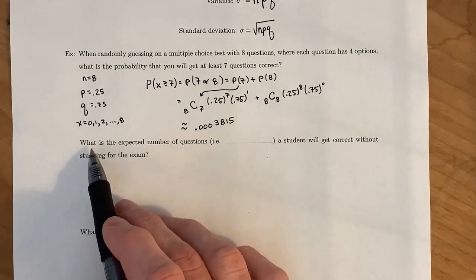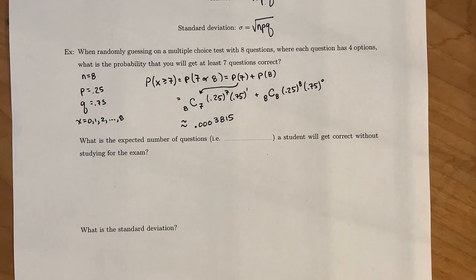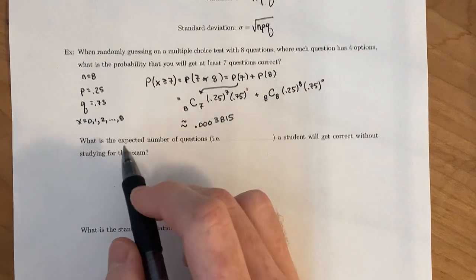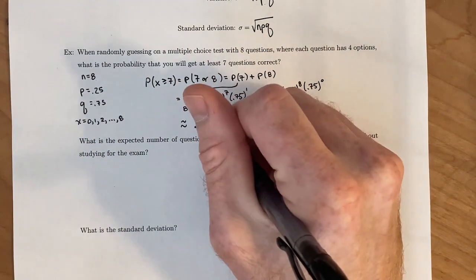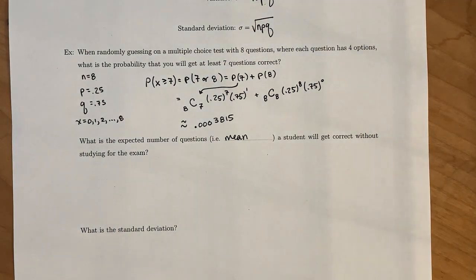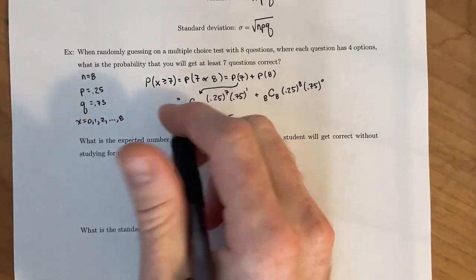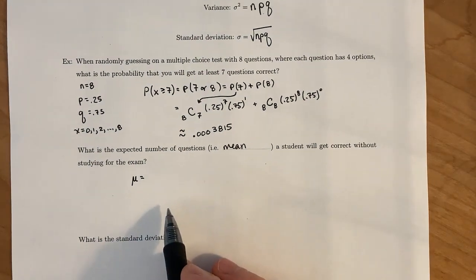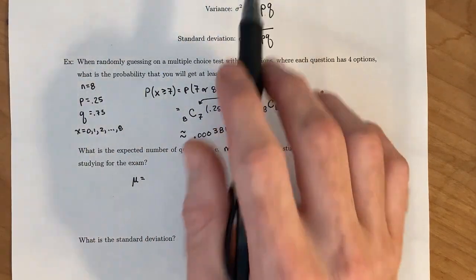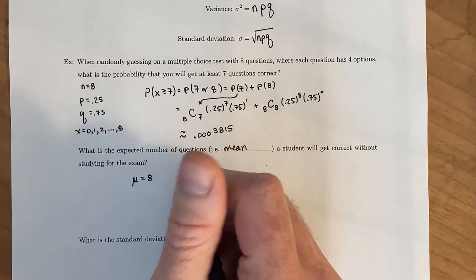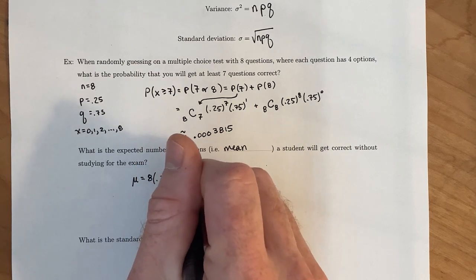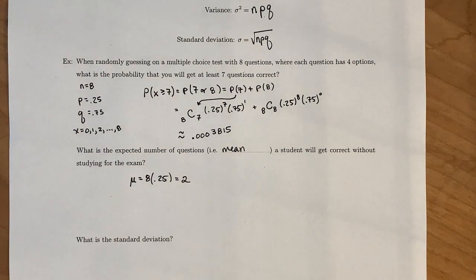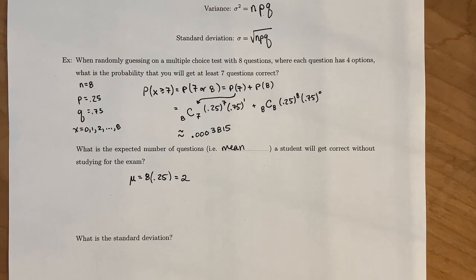And so, why don't we figure out what the expected value is? So, if you don't study at all, and you just come in and fill out A, B, C, D, or whatever, what would be the expected score you would get on that test? And so, the expected number of questions, which is your expected value, which is just another name for the mean of getting the number of questions correct without studying for the exam. Well, we calculate mu. And because we have ourselves a binomial distribution, we know that the mean is equal to N times P. And so, we have 8 as our N. Our P is 0.25. And so, you would be expected to get two questions correct if you just randomly started picking out answers out of those eight questions.